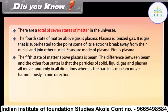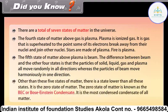The fifth state of matter above plasma is beam. The difference between beam and the other four states is that the particles of solid, liquid, gas and plasma all move randomly in all directions, whereas the particles of beam move harmoniously in one direction. Other than these five states, there is a state lower than all of them — the zero state of matter, known as the BEC, a Bose-Einstein condensate.